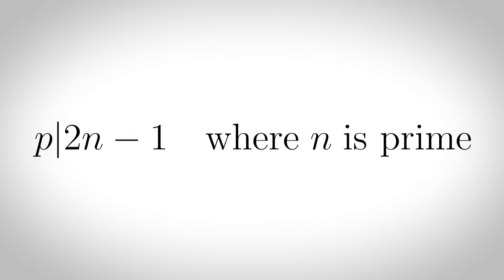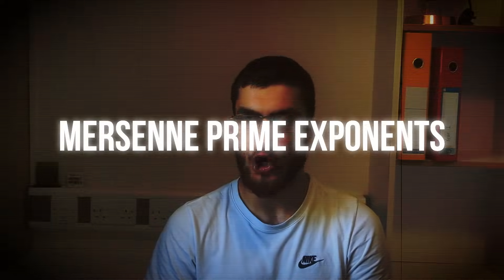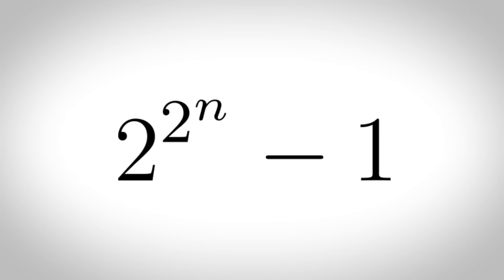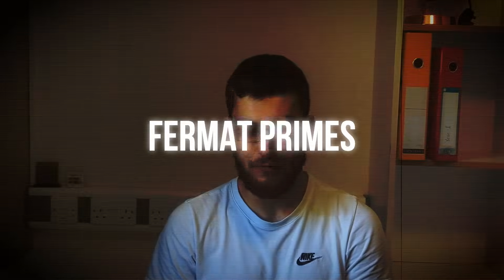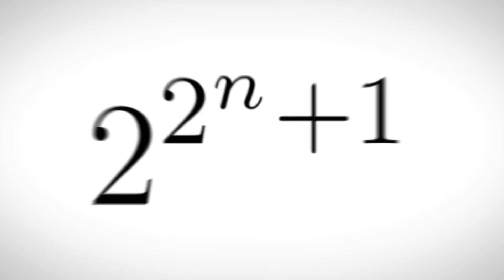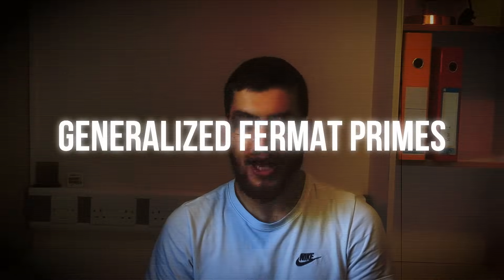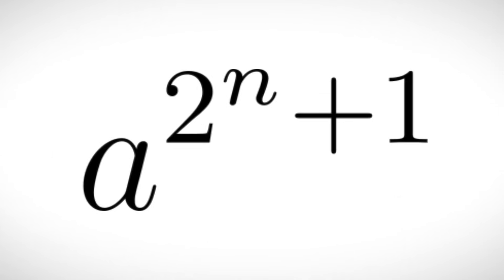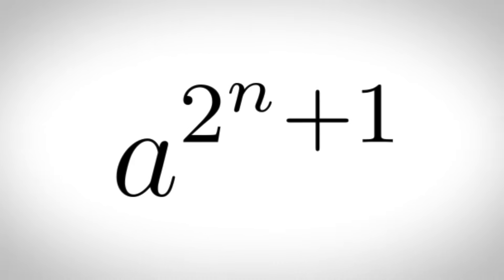Mersenne divisors: primes that divide 2ⁿ minus 1 for some prime number n. Mersenne prime exponents: primes p such that 2 to the p minus 1 is prime. Double Mersenne primes: primes of the form 2 to the (2 to the n minus 1) minus 1. Fermat primes: primes of the form 2 to the (2 to the n) plus 1. Generalized Fermat primes: primes of the form a to the (2 to the n) plus 1 for a fixed integer a.